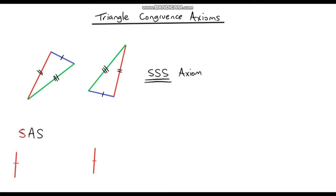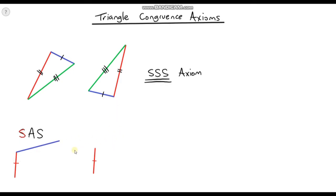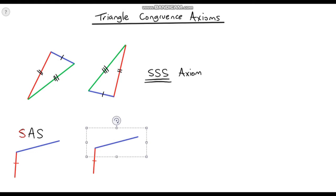Now let's look at the other side length and draw that in blue. My second side length goes this far, and again it has to be the same for the second triangle, so I'm going to copy and paste that and attach it here. So we've got our two side lengths which are exactly the same — that's our second S. And now the A: the angle in between them has to be the same. The way I've done this it's already the same, so I can just label this angle here. I don't know what the angle measures but I know those angles are exactly the same.